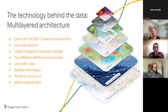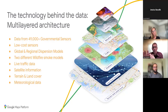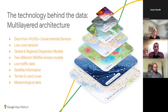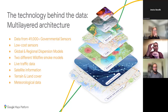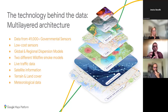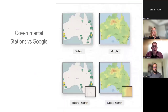The technology behind our data is multi-layered. We take data from those 49,000 stations, and add low-cost sensors where coverage is missing, wildfire smoke dispersion models, live traffic data, global and regional dispersion models, weather and meteorological data, terrain and land cover, and satellite information. All this is layered together. It uses a lot of AI to fill in all the gaps, providing much more granular coverage — as you can see comparing Australia's governmental stations to our heat map coverage.